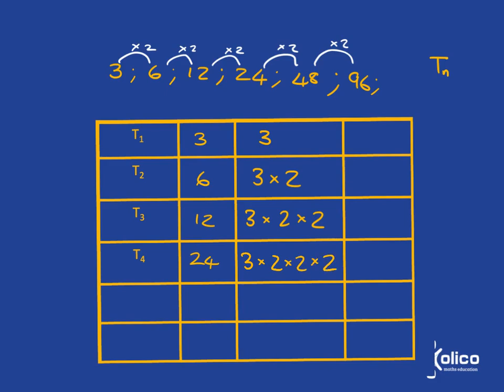Now what you're going to see is if I write this using exponential notation, I'll be able to spot the formula sitting there. So this was just 3. This is just 3 times 2 to the power of 1. Here we've got 3 times 2 times 2. That's 2 to the power of 2. And here we've got 3 and then 2 times 2 times 2, three 2's multiplied together. So that's 2 to the 3.